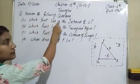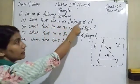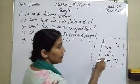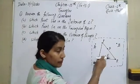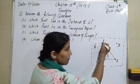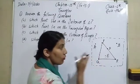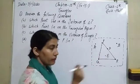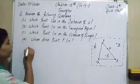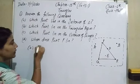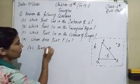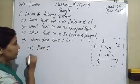So which point lies in the interior of the triangle? The answer is point E. Interior of triangle means which point lies inside of this triangle — that means point E. So the answer to the first part is point E.